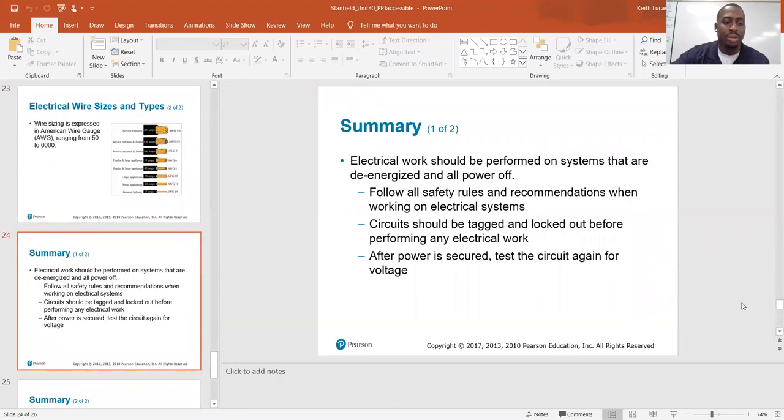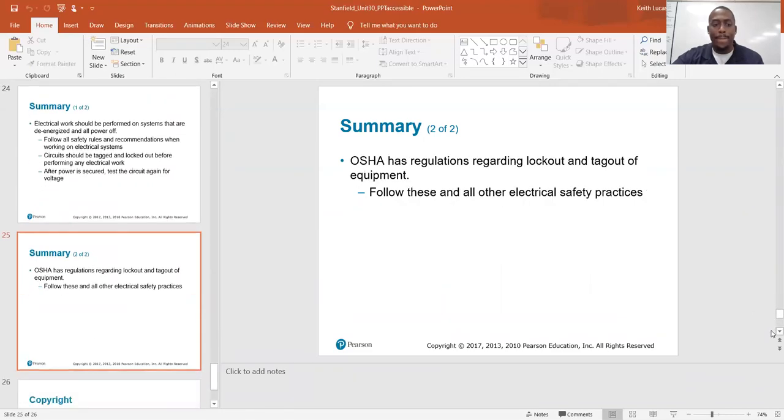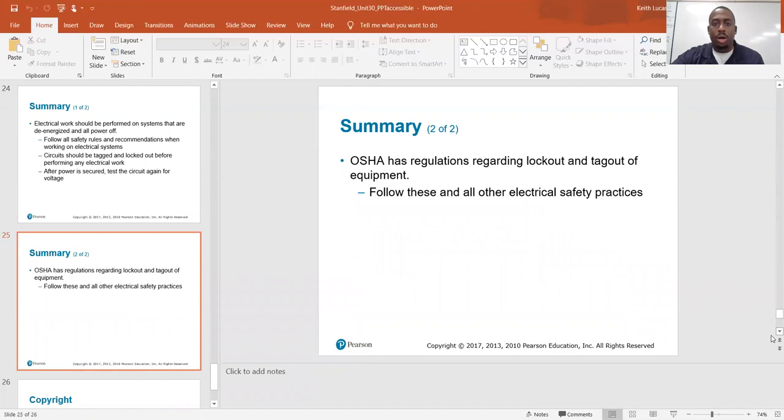I've been sitting here too long. So in summary, electrical work should be performed on systems that are de-energized and all power off. Follow all safety rules and recommendations when working on electrical systems. Circuits should be tagged and locked out before performing any electrical work. After power is secured, test the circuit again for voltage. OSHA has regulations regarding lockout and tagout of equipment. Follow these and all other electrical safety practices.